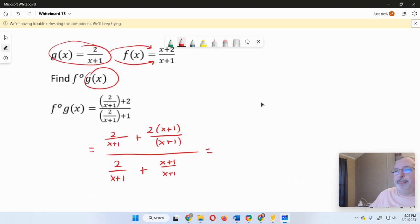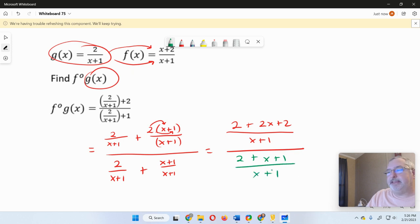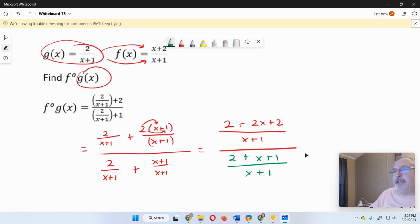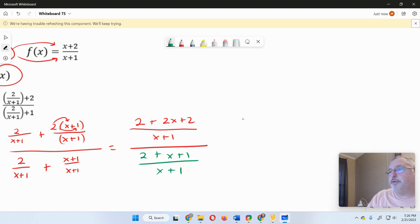So now it's just a matter of simplifying these. And again, this is the hardest one. So if you don't have a problem like this, don't worry about it. But at least some of you are going to have a problem just like this. And so we'll have in the top, 2 plus, and here I'm going to distribute, 2x plus 2 over x plus 1 over 2 plus x plus 1 over x plus 1. Now we're just combining any like terms that we have. And I have 2 plus 2, which is 4. So that would be 2x plus 4 over x plus 1 over 2 plus 1 is 3. So this would be x plus 3 over x plus 1.